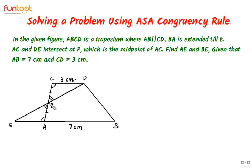In these two triangles, we have two angles and the included side equal to the corresponding two angles and the included side of the other triangle. So we can say that the two triangles are congruent by the ASA rule of congruency.